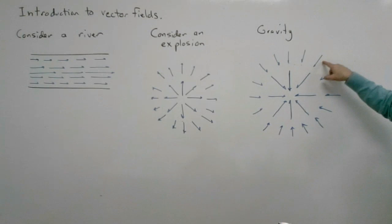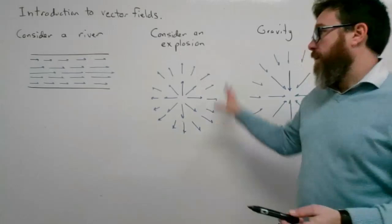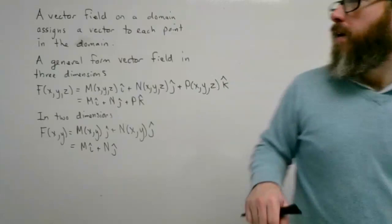The next thing I want to do is define what a vector field function is and then graph it on the x-y plane. Even though it's tedious, it's still possible. A vector field on a domain assigns a vector to each point in the domain.